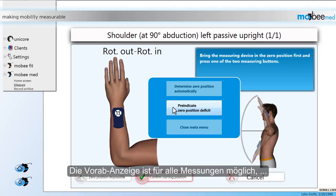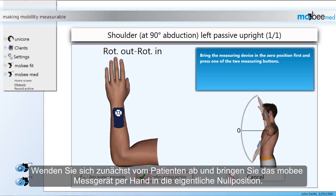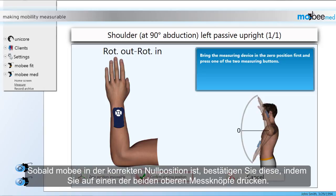The pre-indication of the zero position deficit is available for all measurements, and that is why we are going to look at this solution first. First, step away from the patient and simply hold the Mobi device in the actual zero position. Please note that this step is just a simulation of where the zero position should be and does not happen directly on the patient. As soon as Mobi is in the correct zero position, confirm by pressing one of the measuring buttons on top of the device.